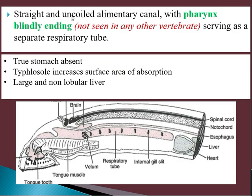The digestive system has a straight and uncoiled alimentary canal starting from the mouth, leading to the buccal cavity, then the pharynx, and continuing as the esophagus. However, there is a peculiarity in Petromyzon: the pharynx is blindly ending rather than leading to the esophagus.